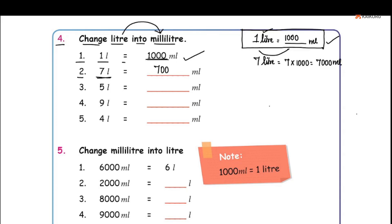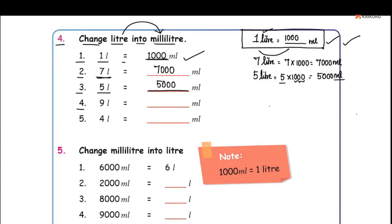5 L is equal to dash ml. If 1 liter is 1000 ml, then 5 liters is equal to 5 into 1000. That gives us 5000 ml — we have three zeros. So 5 L is equal to 5000 milliliters.